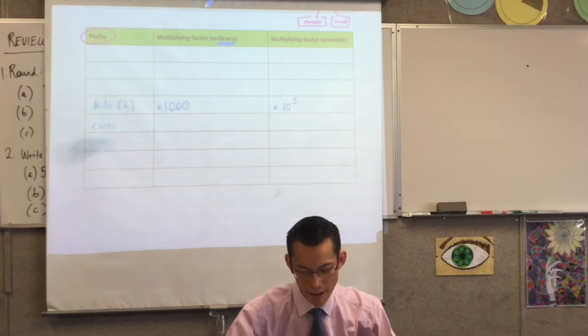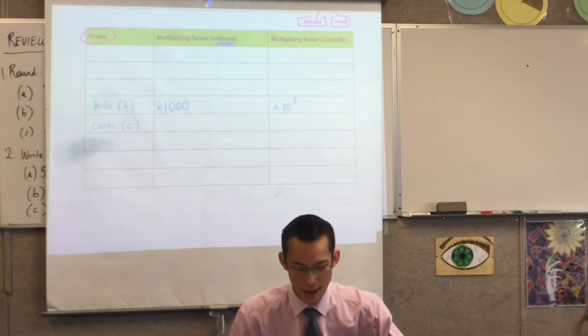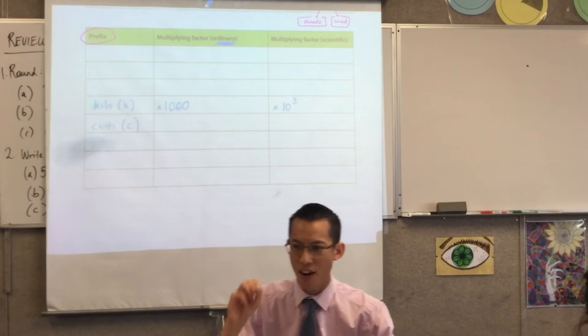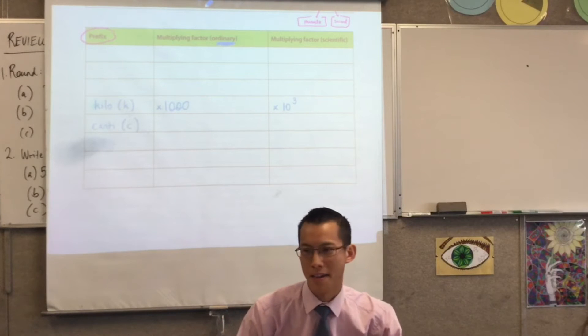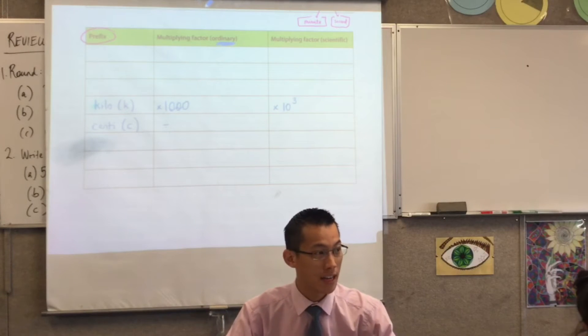Centi, right? So, you've got C, and then you add that on to M, we get CM. So, here, instead of multiplying by 1,000, we're actually dividing by how many centimeters in a meter?